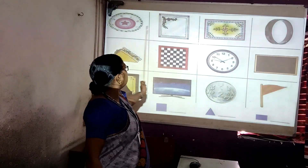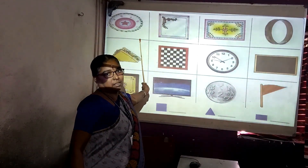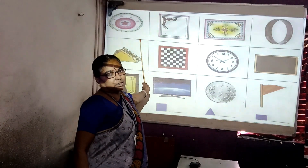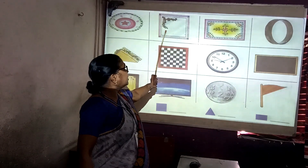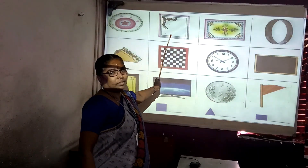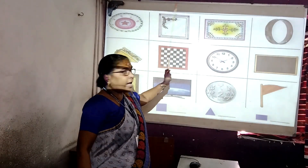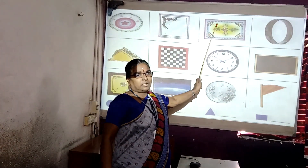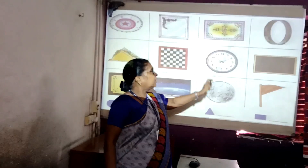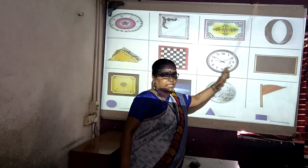Here, see — what is the shape of this? Yes, this is a circle. And this one? Yes, it is a square. And this is a rectangle. And this is a circle.